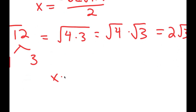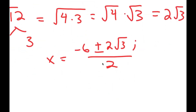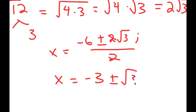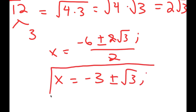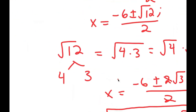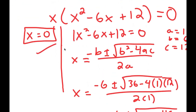So I get x equals negative 6 plus or minus 2 root 3 i, over 2. Dividing each term by 2, I get x equals negative 3 plus or minus root 3 i. So my three solutions are x equals negative 3 plus root 3 i, x equals negative 3 minus root 3 i, and x equals 0.